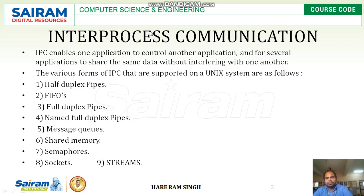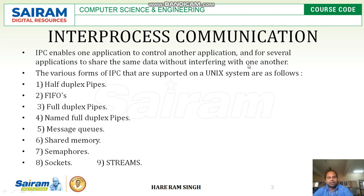Let us see what is inter-process communication. When two processes communicate with each other or share some common data with each other without interfering, that is called inter-process communication. Inter-process communication enables one application to control another application and for several applications to share the same data without interfering with one another.